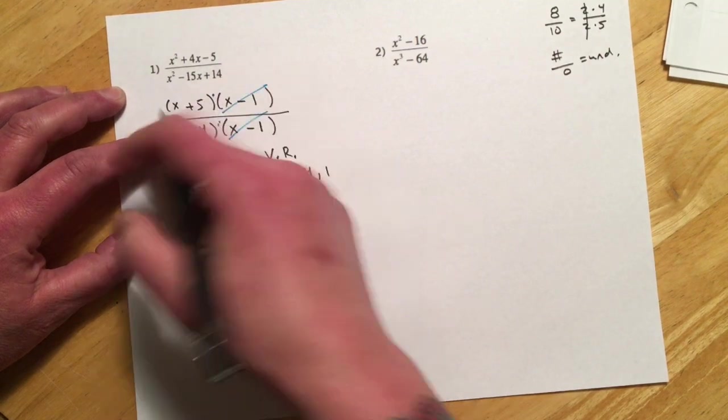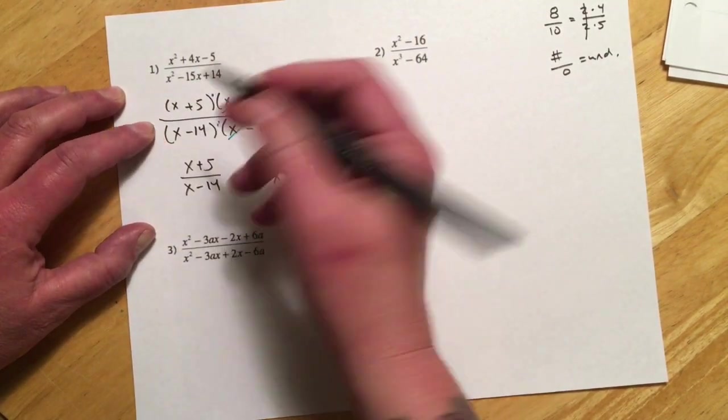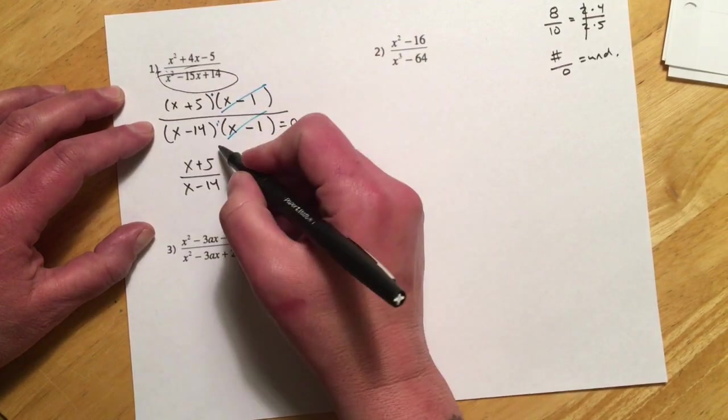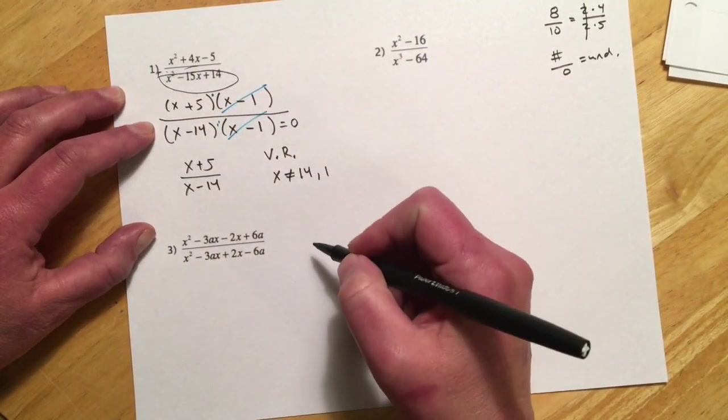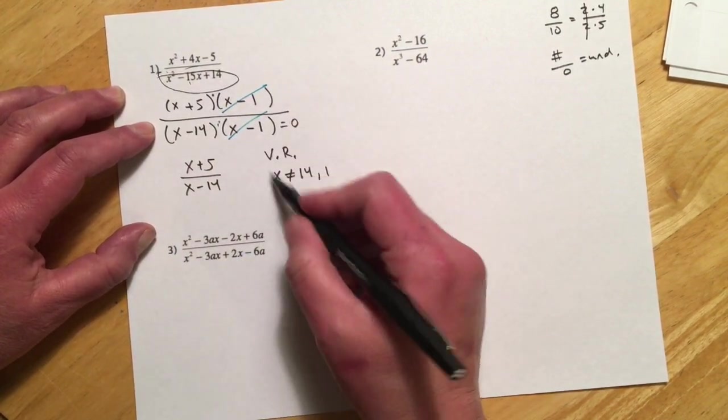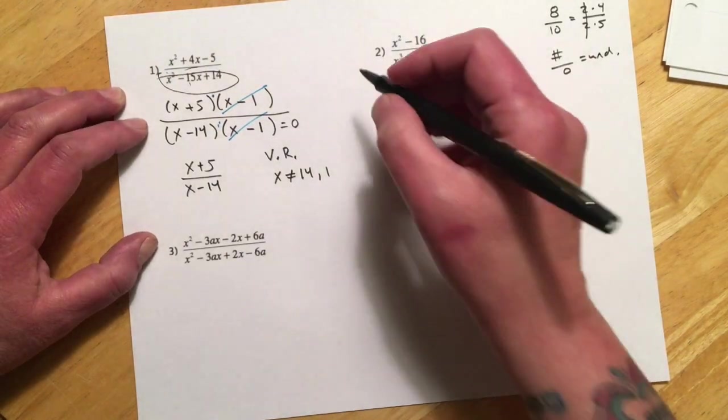that would cause this to be zero. Zero times, who cares, would be division by zero. So for these problems, we're always going to look at whatever's in the denominator, set that to zero prior to canceling, because it's always relative to the original problem. And then the numbers that would make the denominator zero are going to be your restrictions. For number two,